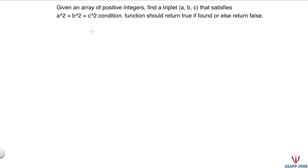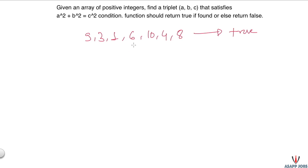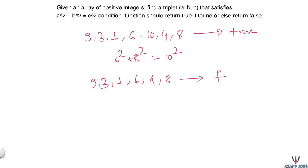For example, if the input array has elements [9, 3, 1, 6, 10, 4, 8], the function should return true, because we have a triplet that satisfies the condition: 6² + 8² = 10². Similarly, if the input array is [9, 3, 1, 6, 4, 8], the method would return false, because there is no triplet that satisfies a² + b² = c².